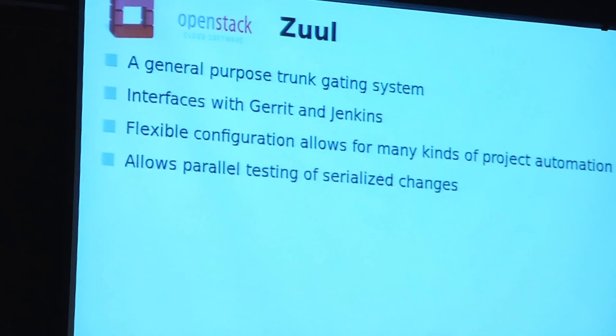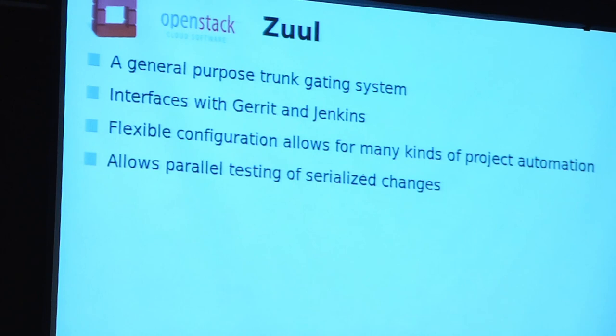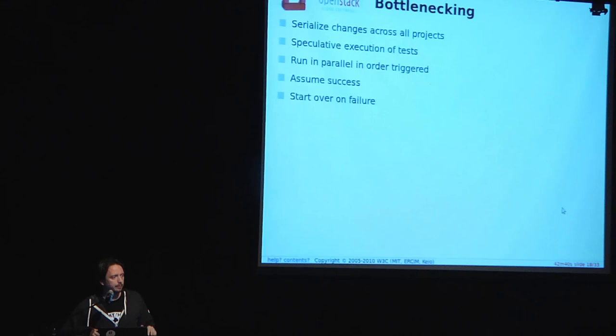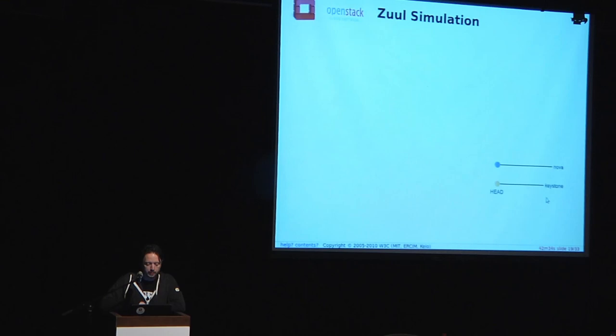Doing this serially is a problem, so we wrote a thing that lets us keep the serial state and execute things in parallel using optimistic branch prediction from processor design — pipelining, as it were. What this does is keep a virtual serial queue of all changes in the order they are approved, and then test them in parallel as if the changes ahead of them in the queue would have passed. If one of them fails, it will kick that one out and restart the jobs from that point in the queue.